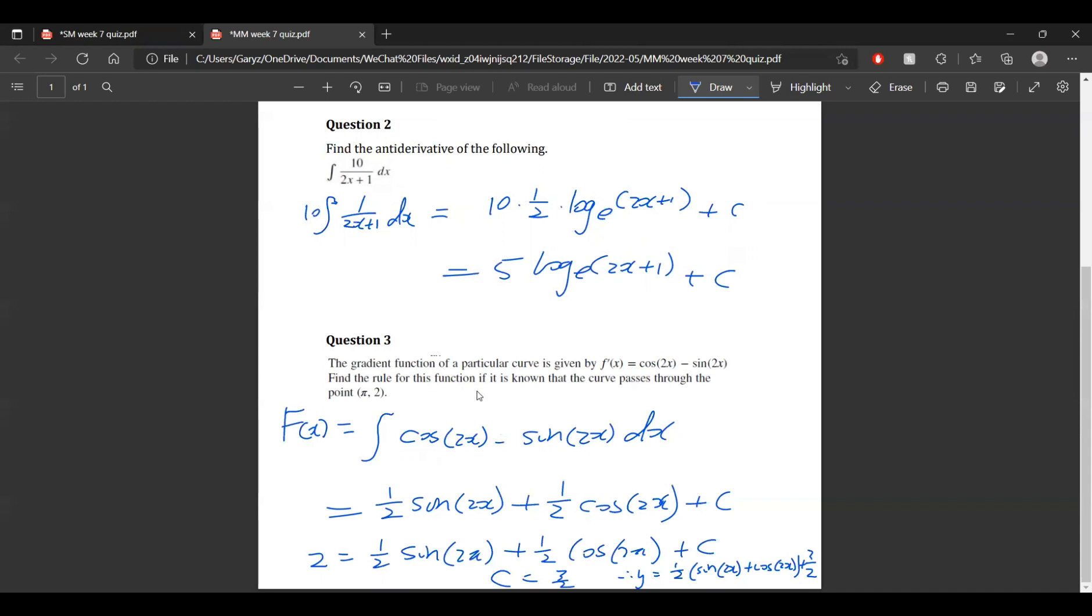the anti-derivative cosine of 2x is half sine 2x because we need the half at the front, because if we derive sine 2x it becomes 2 cosine of 2x. So the half is the reciprocal of the 2, and the same logic for negative sine of 2x, which became a half cosine of 2x. And yeah, don't forget the plus c at the end.